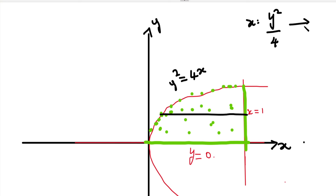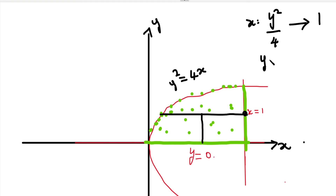Now the upper limit of x is at the right end of the strip, which is the line x equal to 1. So upper limit of x is 1. Next, for the y limits — moving the strip, the lower end of y is at the line y=0. So the y lower limit is 0.